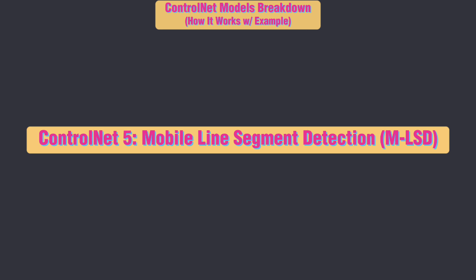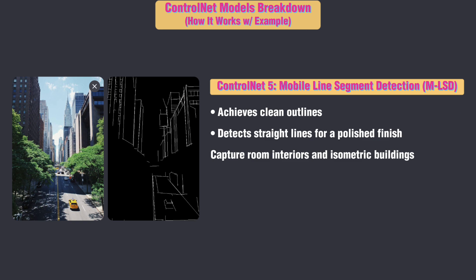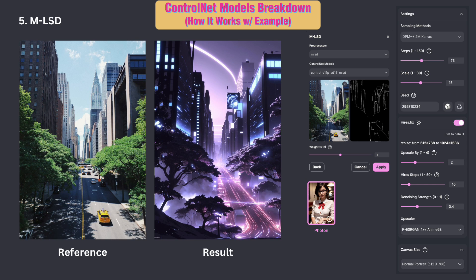ControlNet 5: Mobile Line Segment Detection (MLSD). This helps you achieve clean outlines in any setting. It excels at identifying straight lines and edges, making it especially valuable for applications in architecture. Here is an example of transforming a modern city landscape into a futuristic world.